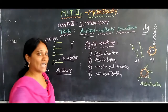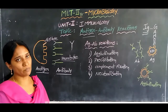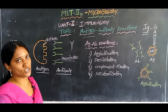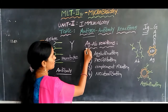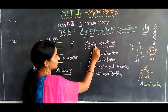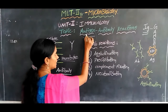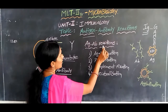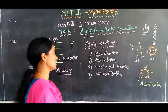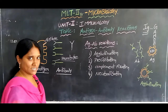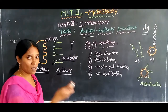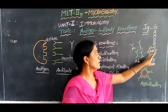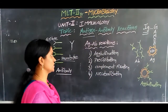The interaction between antigen and antibody is known as the antigen-antibody reaction, abbreviated as Ag and Ab. Antibodies are present in our body while antigens come from outside the body. A few antigens are also present in red blood cells.